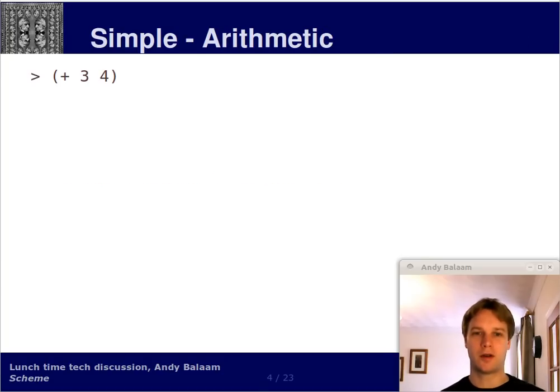So, let's take an example of this. You can add up two numbers. You open bracket, and then you have a plus, which is the name of the function. And then a three and a four, so can you guess what the answer is when I type this into my Scheme interpreter? The answer is seven. Here's another function called star. Can you guess what the answer to this is? It's twelve.